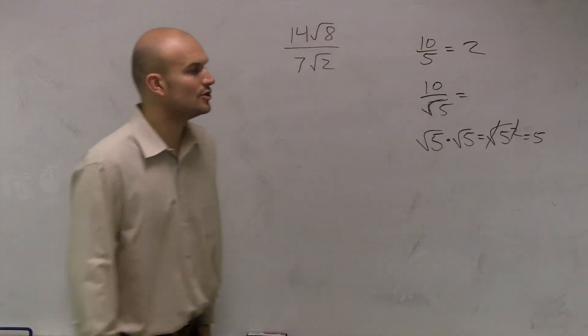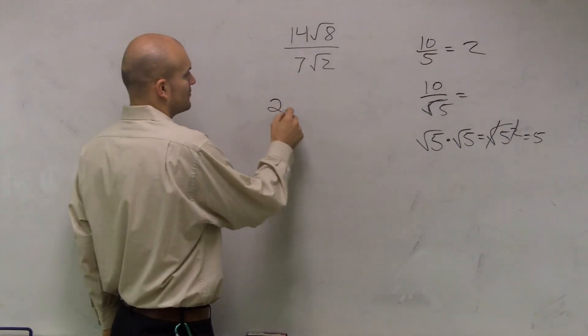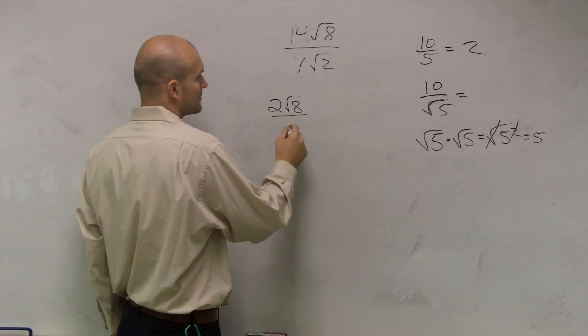So, what I'm going to do, well, first of all, I notice I can reduce 14 divided by seven, right? Automatically, I can rewrite this problem as two radical eight over radical two.